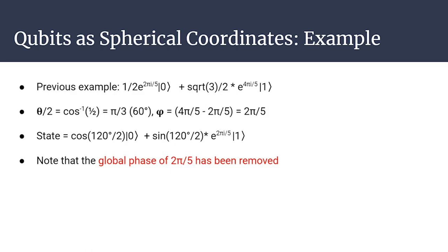Working through the example: θ/2 = arccos(1/2) = π/3, so θ = 2π/3, which is 120 degrees. φ is the relative phase 2π/5, as we discussed. Therefore the state is cos(60°)|0⟩ + sin(60°)·e^(2πi/5)|1⟩. We removed the global phase of e^(2πi/5) as shown before. We've reduced the qubit state to just two real-valued angles.